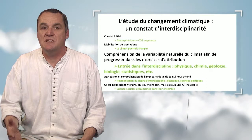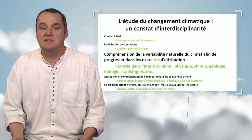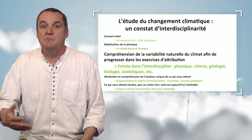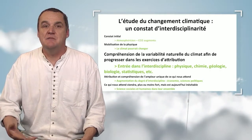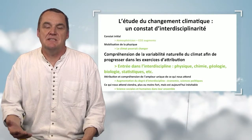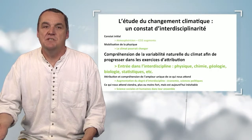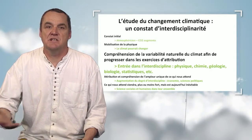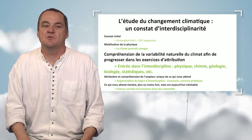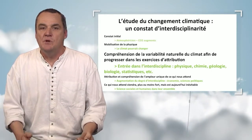Physics, chemistry, geology, statistics, biology — everything we observe is part of a natural or artificial variability of climate. This is the first interdisciplinary mode. Human sciences are not yet involved, but here the interdisciplinarity will allow biology to enrich physics and physics to enrich geology, so that we can understand the climate in the past.